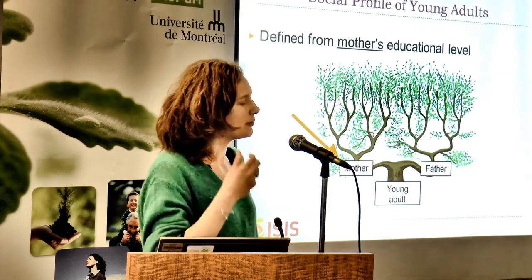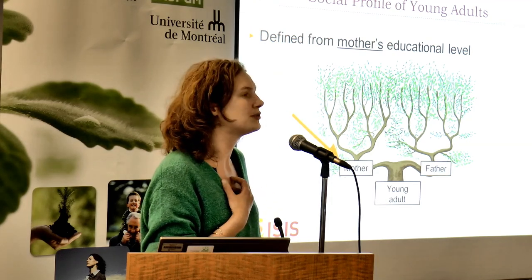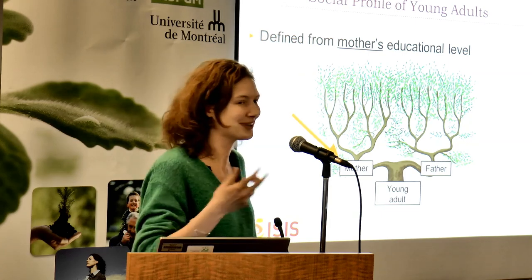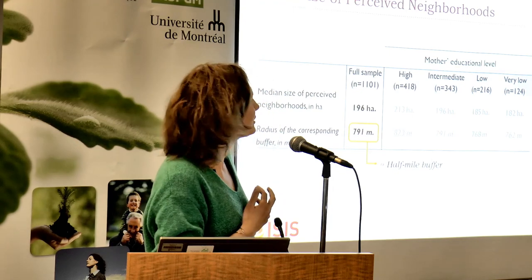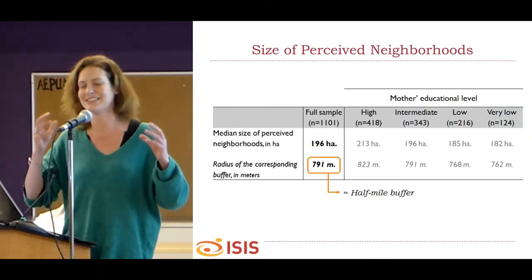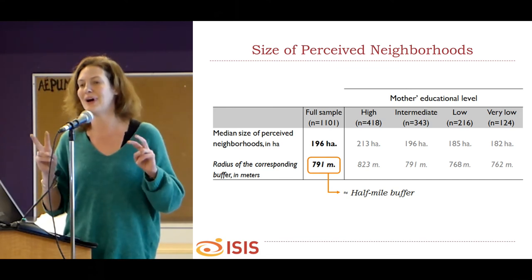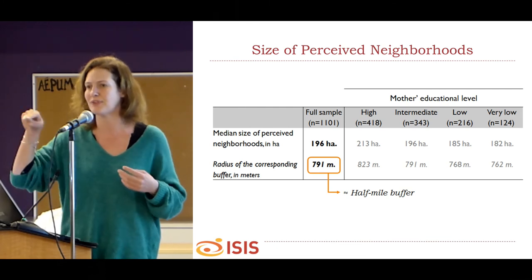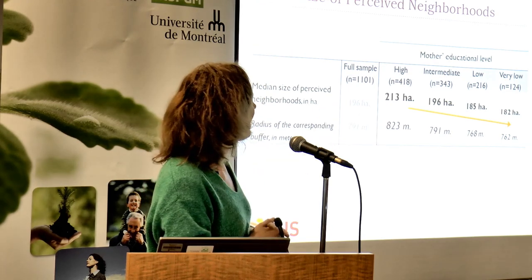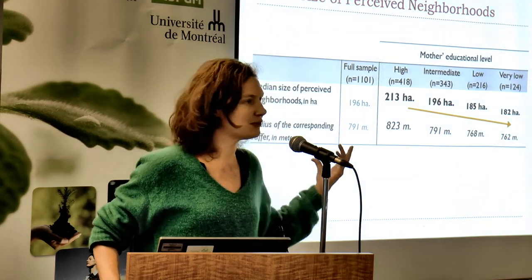Ce qui nous intéressait, c'était de voir les gradients sociaux dans la taille des quartiers perçus. J'ai utilisé le niveau d'éducation de la mère, le niveau d'éducation du jeune adulte étant trop sensible à son âge au cours de sa transition. La taille médiane du quartier perçu est de 196 hectares — ce qui correspond à un cercle de 791 mètres de rayon, soit un buffer de half mile, relativement en lien avec ce qui se fait dans la littérature. On observe que la taille du quartier perçu décroît graduellement avec le niveau d'éducation, de façon statistiquement significative : ce sont les personnes dont la mère a le niveau d'éducation le plus élevé qui ont le quartier perçu le plus grand.